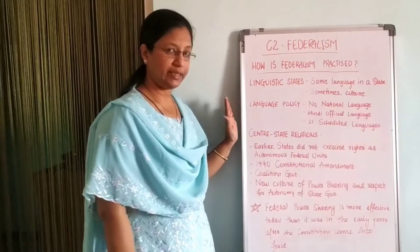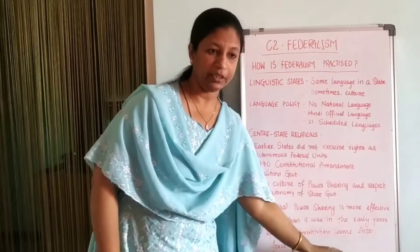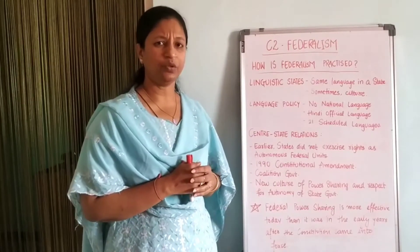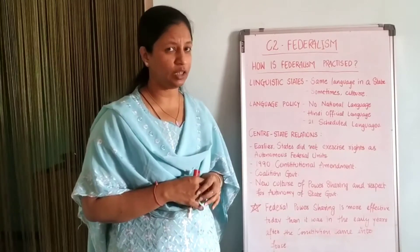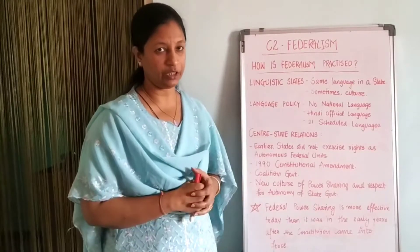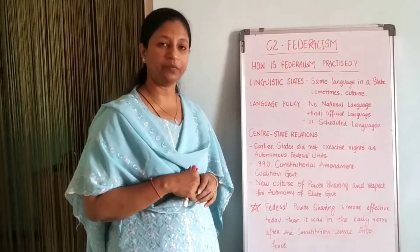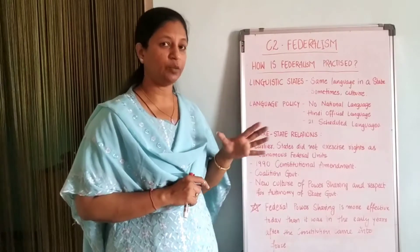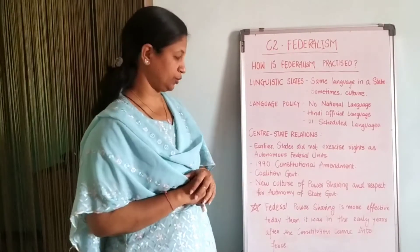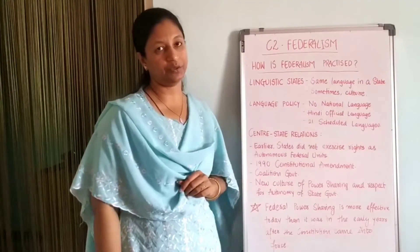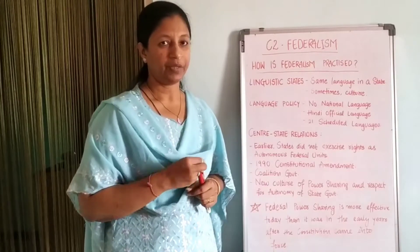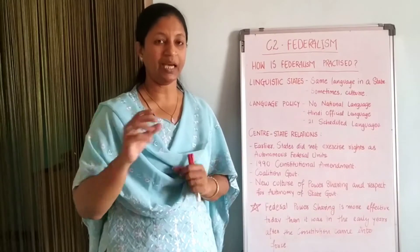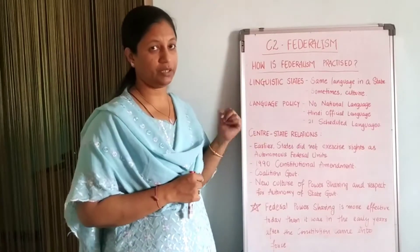The third point is centre-state relations, which plays a very vital role. From independence in 1947, after the first general election, states were still being divided and did not have their own regional parties. It was mainly Congress and BJP at the central level, and the same party was getting elected in the states as well. So the central government was influencing the state government. Earlier, states did not exercise rights as autonomous federal units.